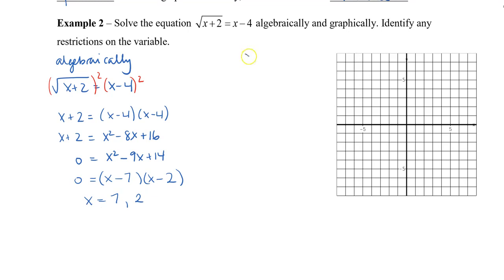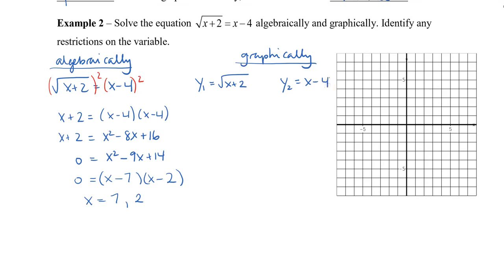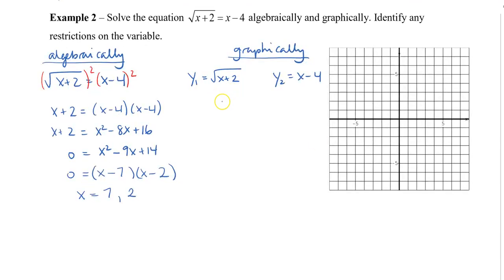Now let's check graphically. We're going to graph y1 equals root x plus 2 and y2 equals x minus 4 separately, and see where they intersect. For the table of values, I look at the expression inside the radical: x plus 2 must be greater or equal to 0, so x is greater or equal to negative 2. I'll start my table at negative 2, where I get 0.